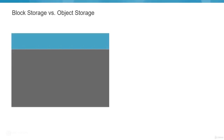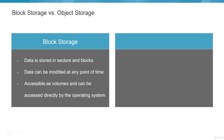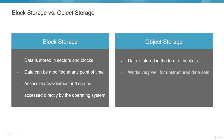To summarize: block storage stores data in sectors and blocks, data can be modified at any time, it is accessible as volumes and directly by the operating system — this is what we access from EC2 machines. In object storage, data is stored in buckets, it works well for unstructured data sets, but data cannot be modified — only versions can be stored. Large data sets can be stored easily as there is a lot of space with object storage.